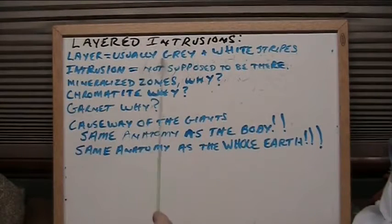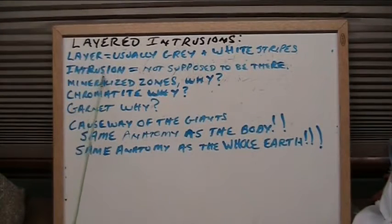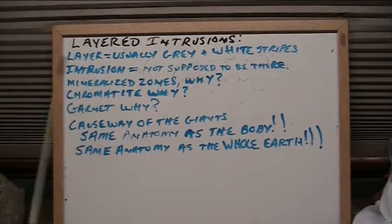They're gray and white stripes, and they have red stripes in them here and there, which is the blood. They're intrusions — they're not supposed to be where they are, and they are enormous. I'm not talking little; I'm talking about miles and miles and miles.